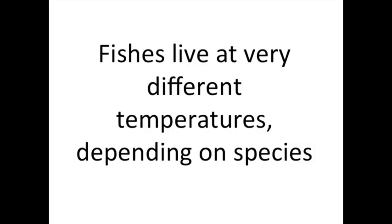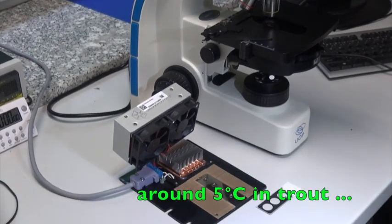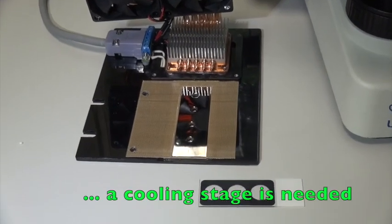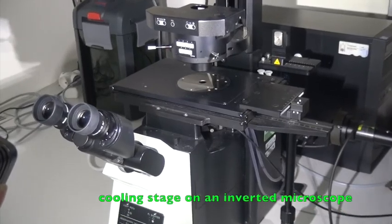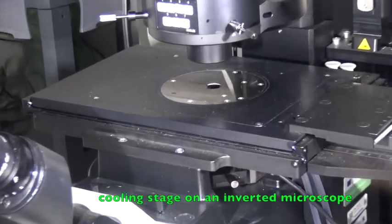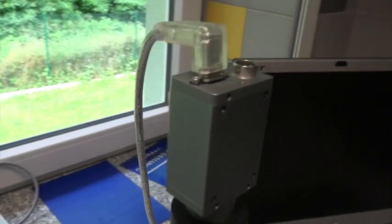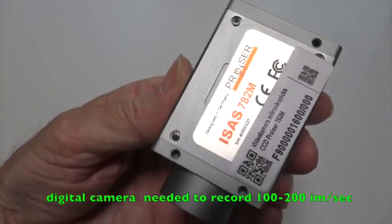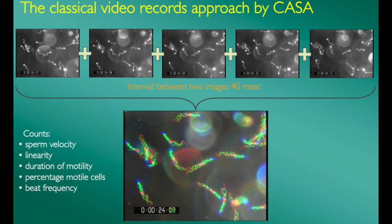Fishes live at different temperatures depending on species. Sperm motility should be recorded at the temperature where the fish is reproducing. For this purpose, a cooling stage should be set on the microscope so as to correctly control the temperature, especially in the low range below 10 degrees centigrade. For automated quantification of motility parameters, one can use a computer-assisted sperm analysis system, so-called CASA. A digital video camera is convenient for image acquisition for CASA. The first step in CASA analysis requires merging of several video images.